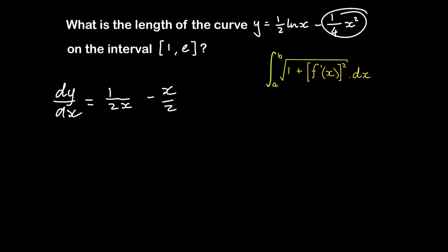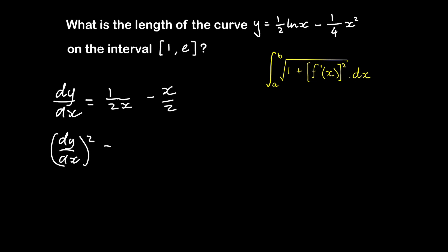Because x squared differentiated is 2x, and 2 over 4 is 1 over 2. So minus 1 over 2x, or minus x over 2. Then we need to square that, so (dy/dx)² gives us this.